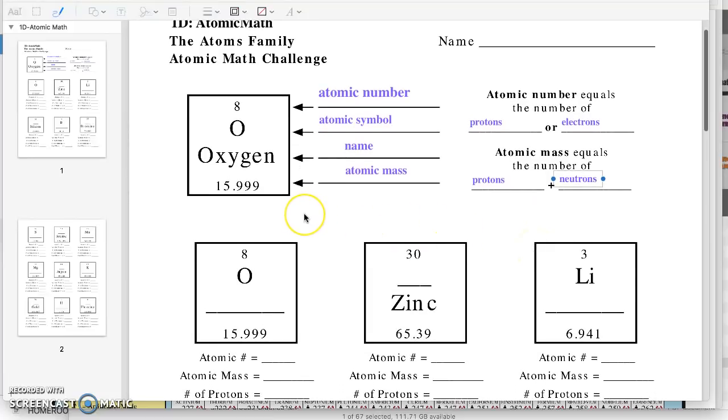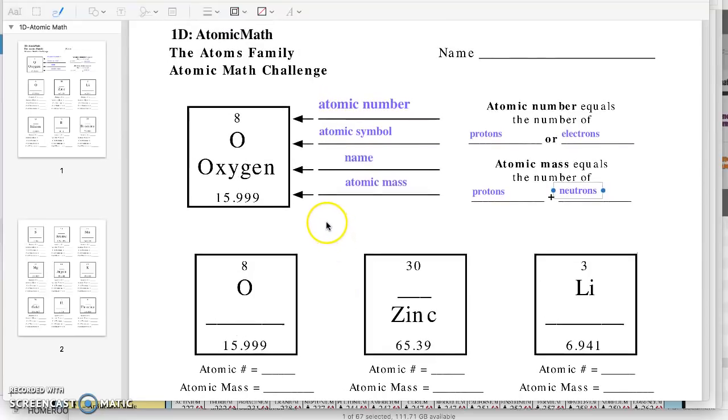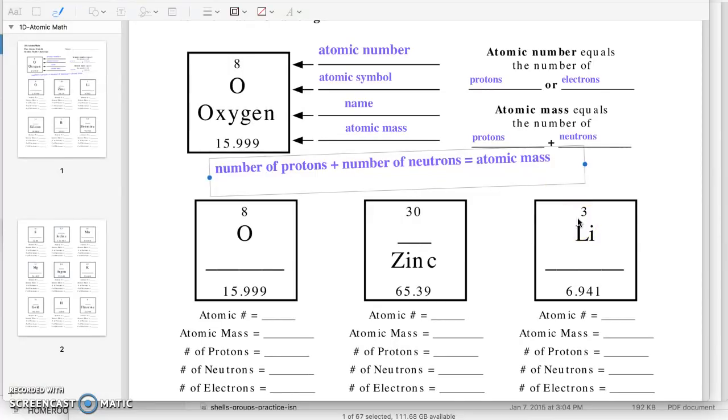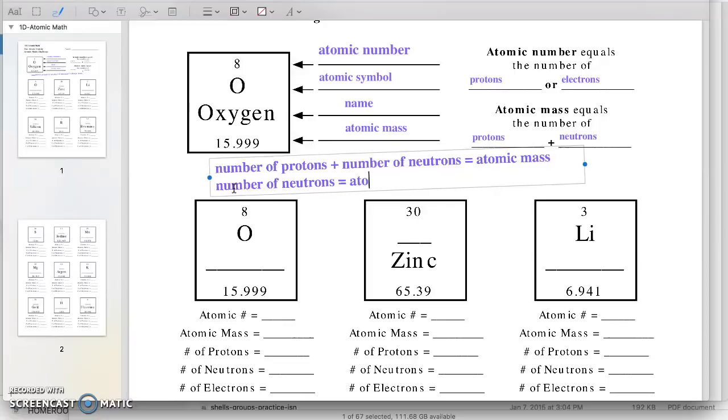So there's another bit of notes that I would like you to write down right now before we start practicing what we've just learned. The other bit of notes is going to help you finish the rest of this page. So something I want you to write down is the number of protons plus the number of neutrons equals the atomic mass. That's just us kind of rewriting what we have over here. Now we can rearrange this equation to figure out the number of neutrons. So the number of neutrons would be equal to the atomic mass minus the number of protons.